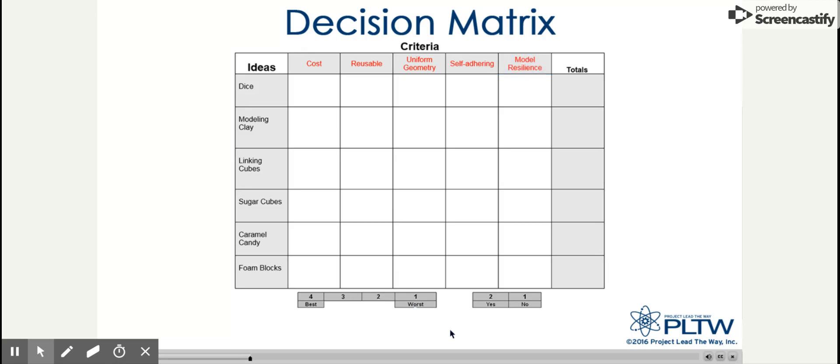To rank the alternatives, we use a matrix that looks like this. Notice the six different modeling options are listed along the left side. The criteria are then listed across the top, and the scale is located on the bottom.